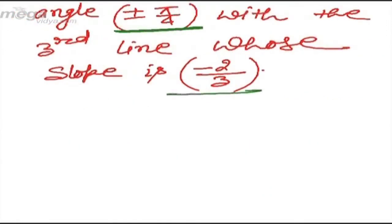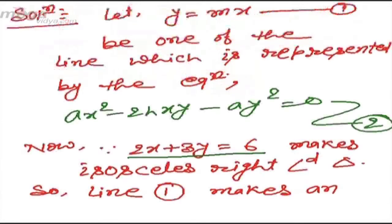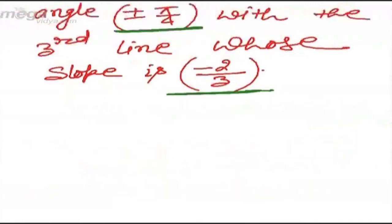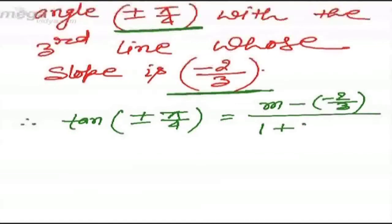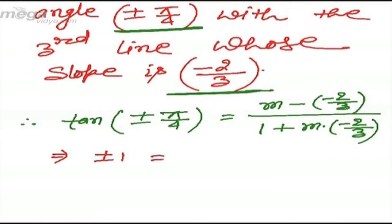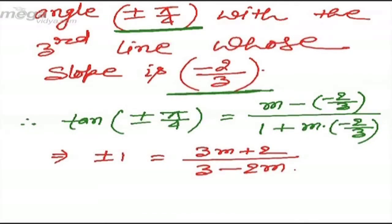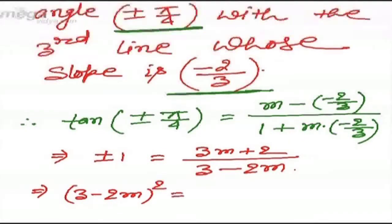The slope of the first line is m. Using the formula tan θ = (m - (-2/3)) / (1 + m·(-2/3)) = (3m + 2) / (3 - 2m), and this equals ±1. To eliminate the ± sign, we square both sides and bring (3 - 2m) to the left, giving (3 - 2m)² = (3m + 2)².